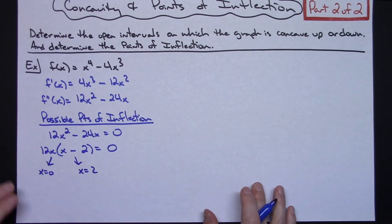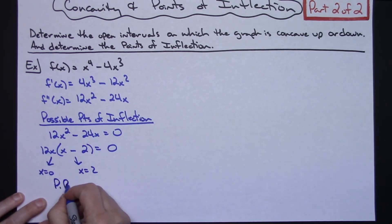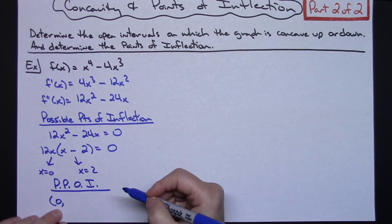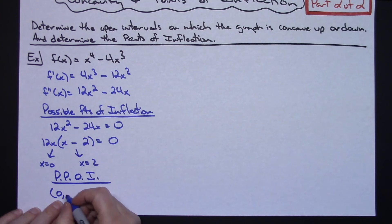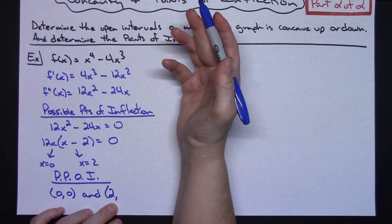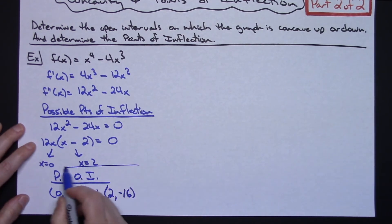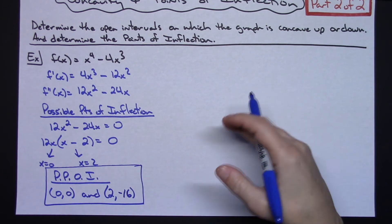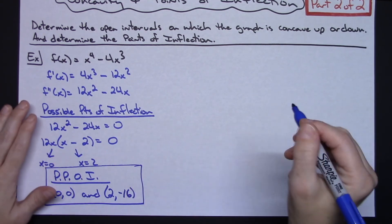Since points of inflection are points on the curve, we write them as ordered pairs. Plugging x equals zero into the original curve gives (0, 0). Plugging x equals two into the original curve gives (2, -16). At this point these are technically just possible points of inflection. I'm going to use a number line to determine concavity and confirm whether they are actual points of inflection.